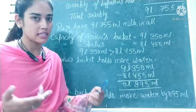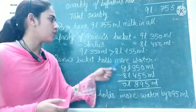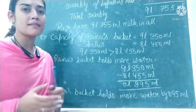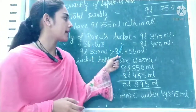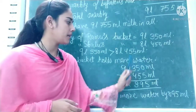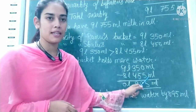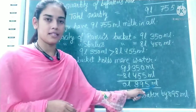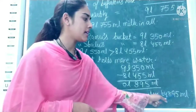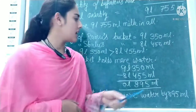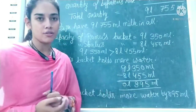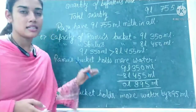Now, how much more? This is also part of the question. How much more means comparison, and in comparison we do subtraction. So we subtract 8 litres 455 millilitres from 9 litres 350 millilitres. The answer is 895 millilitres. It means Ramu's bucket holds more water than Shalu's bucket by 895 millilitres. This is the answer for part E.